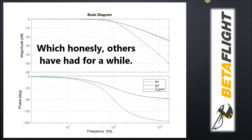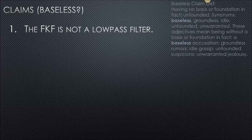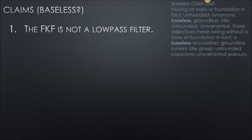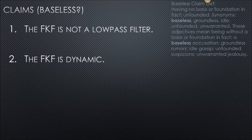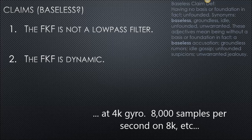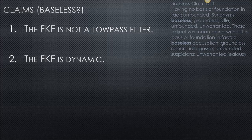Now here are some claims I've seen that I don't see a basis for. First: the FKF is not a low pass filter. I have not seen any data to show otherwise — mathematically on the chart I just showed, and in real-life results, it produces the same thing as what is undeniably a low pass filter, which is the PT-1. I'm open to data that shows otherwise, but it needs to be scientific data. Second: the FKF is dynamic, and Q and R are dynamic. I have not seen anything to show it's dynamic. There are actually unit tests showing they converge on a constant K just like the one in Betaflight within 100 samples — and at 4,000 samples per second, that's well under a second.